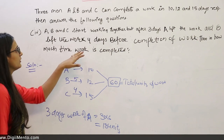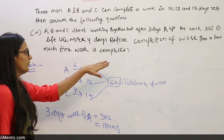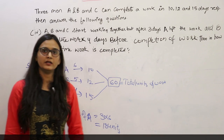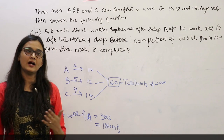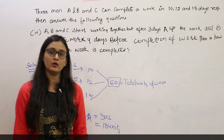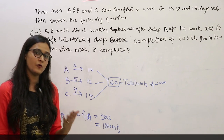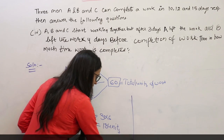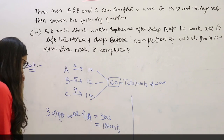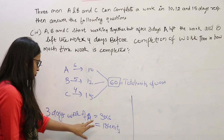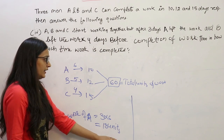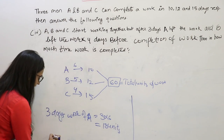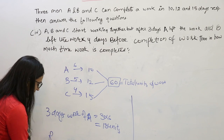Now, B left the work 4 days before the completion of work. So we will assume that B worked extra for 4 days. Now, what we will do is subtract the 18 units that A worked from the total work. Then we will get the remaining work.